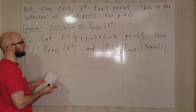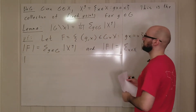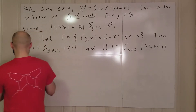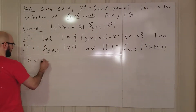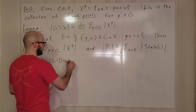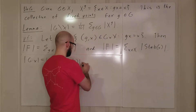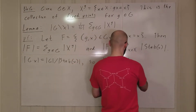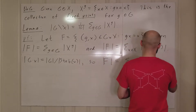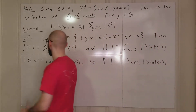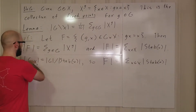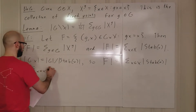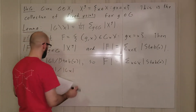So those two sums are equal. Now, by the orbit-stabilizer theorem we know |G(x)| = |G| / |Stab(x)|, so |Stab(x)| = |G| / |G(x)|. Therefore |F| equals the sum over all x in X of |G| divided by the size of the orbit of x under G.